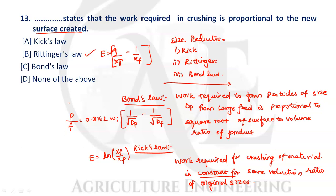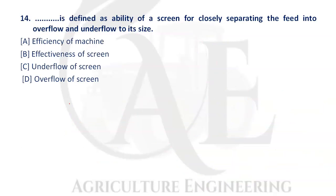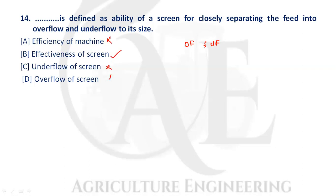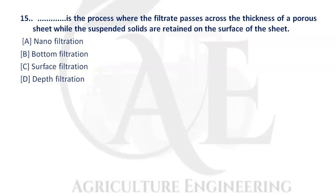Next question: what is defined as the ability of a screen for closely separating the feed into overflow and underflow by size? This is known as the effectiveness of the screen. Option B, effectiveness of a screen, is the correct answer.